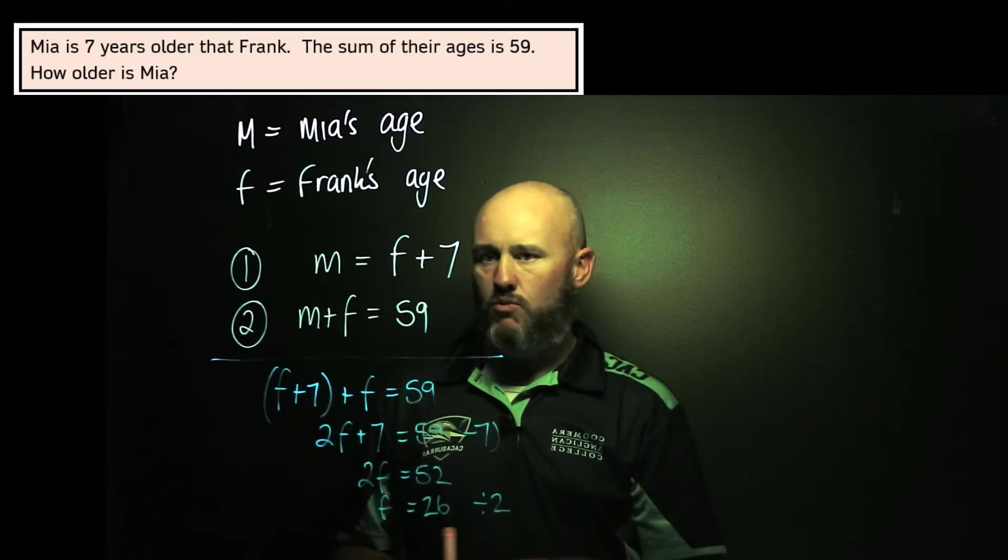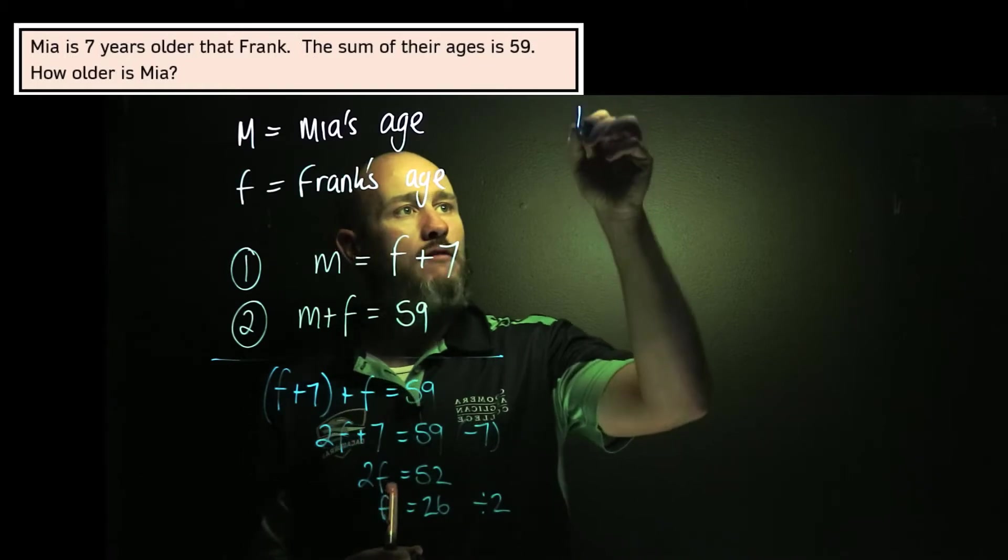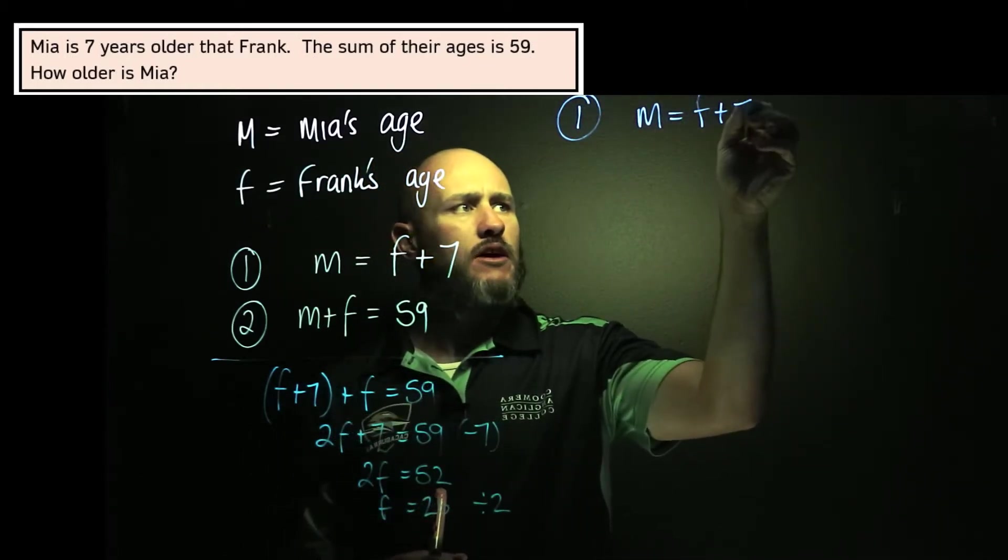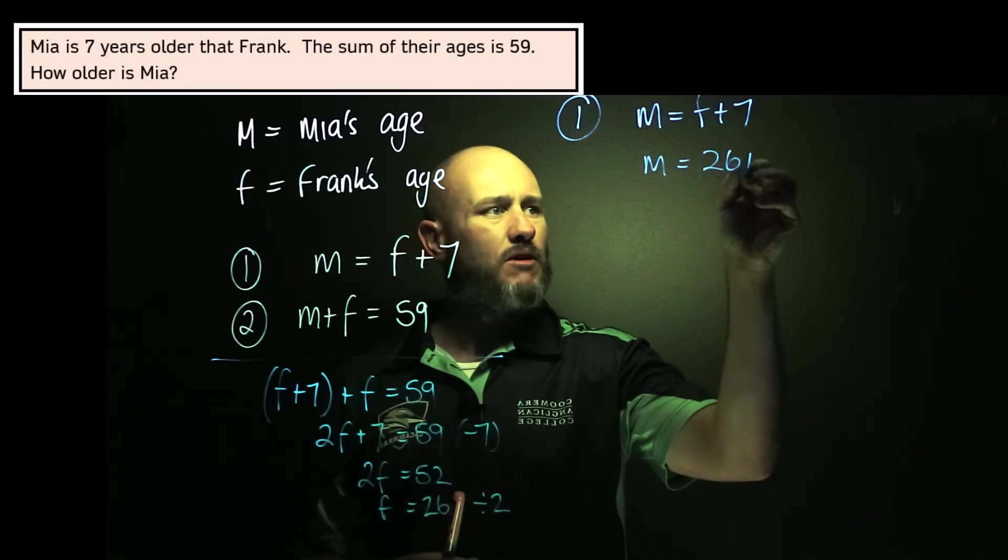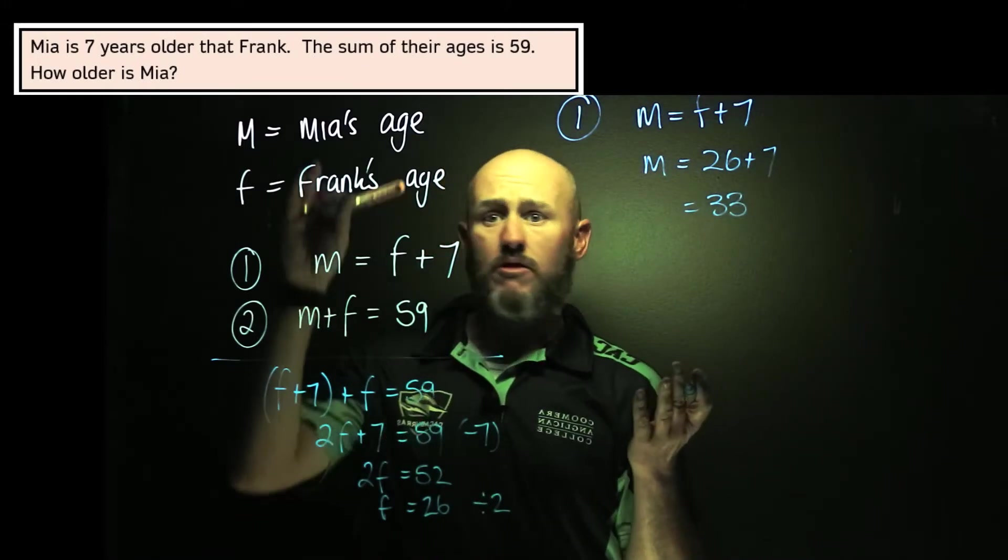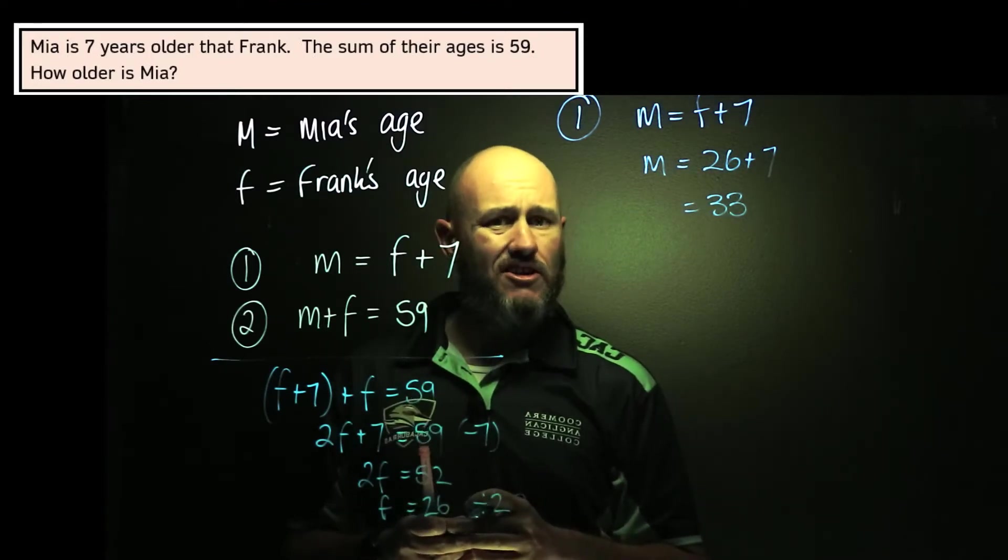And now I can solve for Mia's age as well. I've already got Mia's age as a subject here. So in equation number one, M is equal to F plus seven. So in this case, M is equal to 26 plus 7. She's 33. So Mia is 33 years old. That's what the variable means. And Frank is 26 years old.